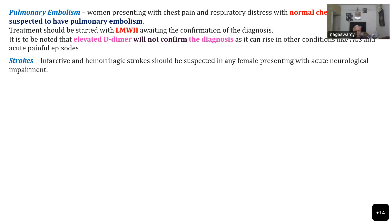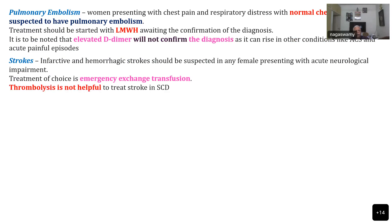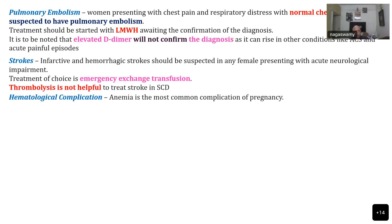The next problem is stroke, which can be ischemic or hemorrhagic. The only treatment for this is emergency exchange transfusion. Even if it is an ischemic stroke, you do not give anticoagulants, and thrombolysis is not helpful. That is the difference between a normal stroke and sickle cell stroke, because the impact is due to sickling of red blood cells and not due to a clot that forms.